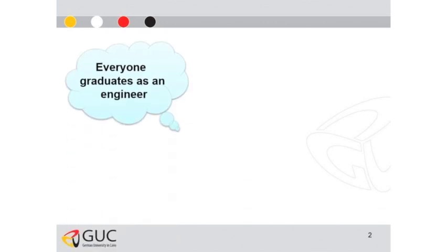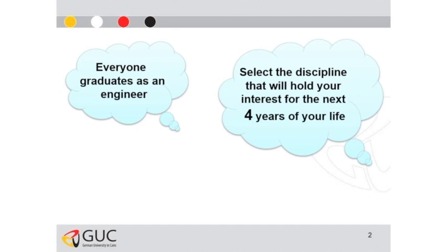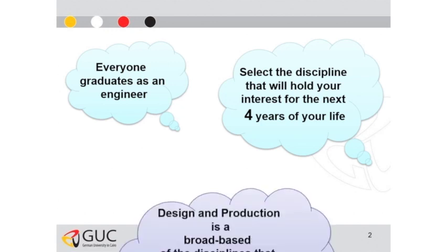What are the different career opportunities provided to me as a Design and Production engineer in the future? Since you are already in your second semester in the engineering program, every one of you will graduate as an engineer. Now it's time for you to select the discipline that you will love and be interested in for the next four years of your life — a huge duration — so it's very important to select the specialization in which you will feel happy and understand that it suits your capabilities and passion.